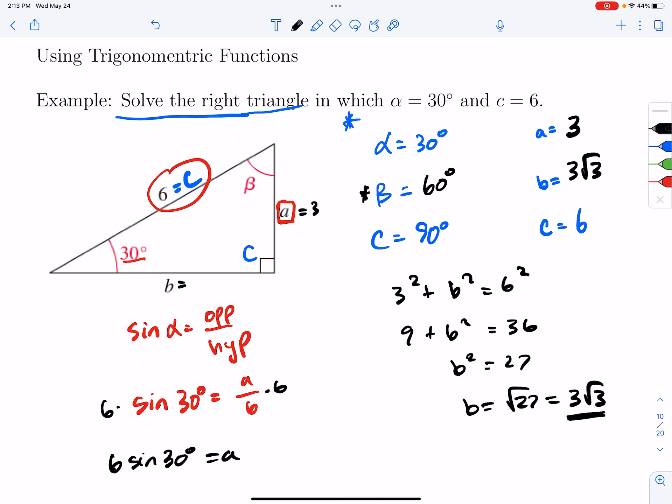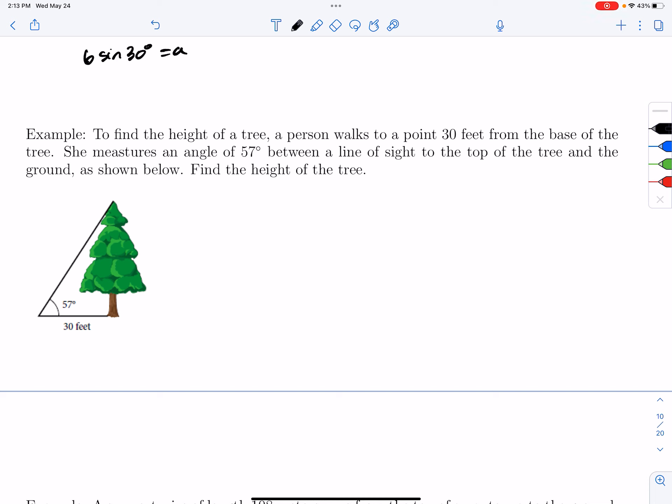It says, to find the height of a tree, a person walks to a point 30 feet from the base of the tree. She measures an angle of 57 degrees between a line of sight to the top of the tree and the ground, as shown below. Find the height of the tree. So what we're trying to find is this height right here.